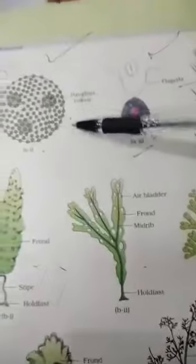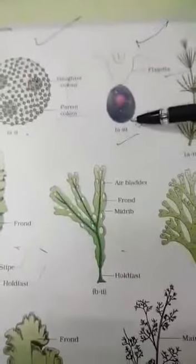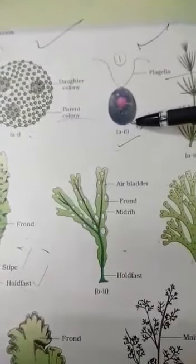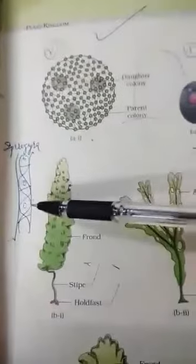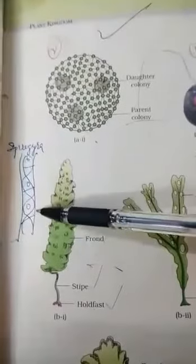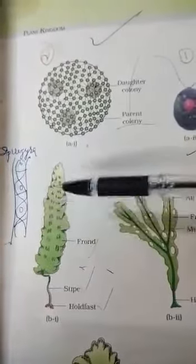I want to show you some of the algae given on page number 31 of your book. Volvox is a colonial algae. Chlamydomonas is a unicellular algae. This is Chara, and this is Spirogyra — it is a filamentous algae.